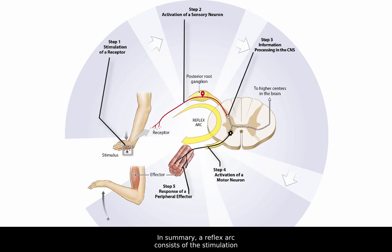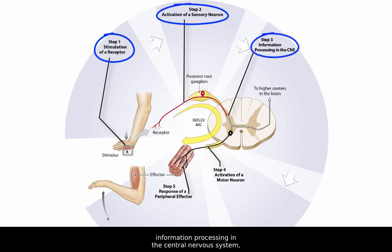In summary, a reflex arc consists of the stimulation of a receptor, activation of a sensory neuron, information processing in the central nervous system, activation of a motor neuron, and the response of a peripheral effector.